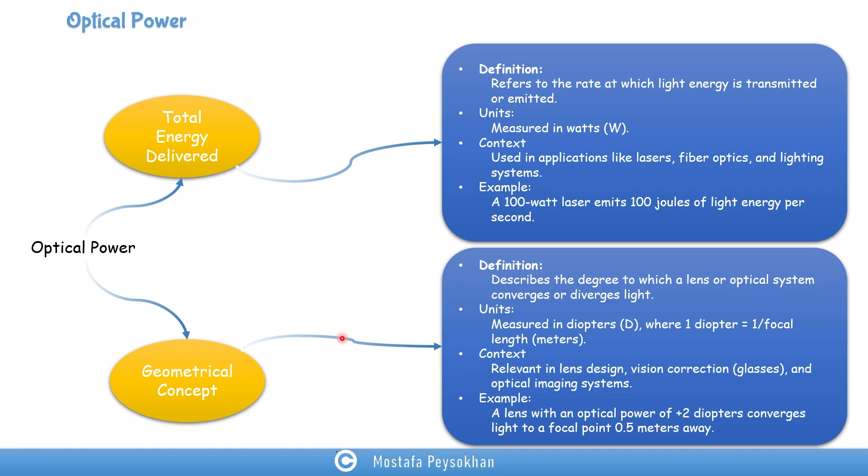And the unit measured in diopters, which one diopter is one over focal length, which is based on the focal length. The unit of the focal length should be meters. And the context of this kind of definition is relevant in lens design, vision correction, optical systems, generally anything that is related to the geometry of the optical elements that we're going to use.